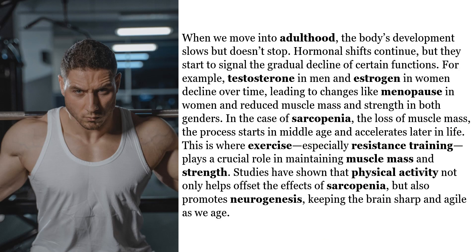When we move into adulthood, the body's development slows but doesn't stop. Hormonal shifts continue, but they start to signal the gradual decline of certain functions. Testosterone in men and estrogen in women decline over time, leading to changes like menopause in women and reduced muscle mass and strength in both genders. In the case of sarcopenia — the loss of muscle mass — the process starts in middle age and accelerates later in life. This is where exercise, especially resistance training, plays a crucial role in maintaining muscle mass and strength. Studies have shown that physical activity not only helps offset the effects of sarcopenia, but also promotes neurogenesis, keeping the brain sharp and agile as we age.